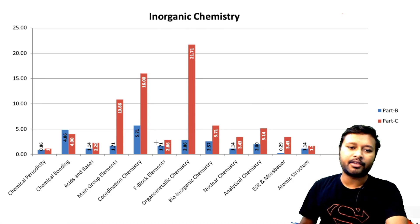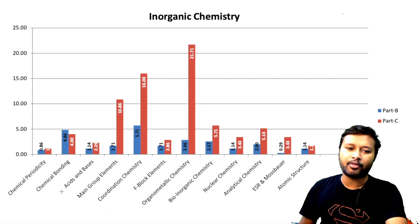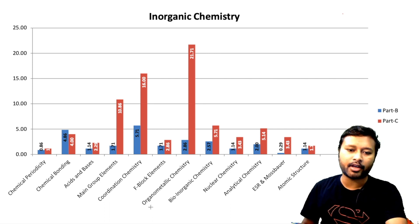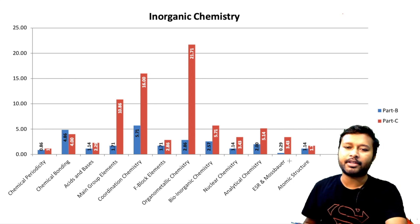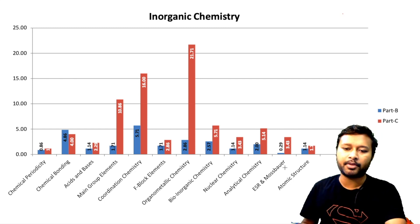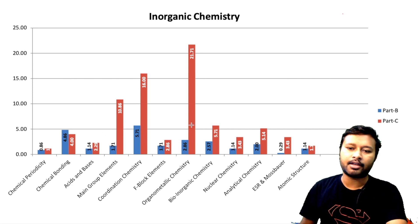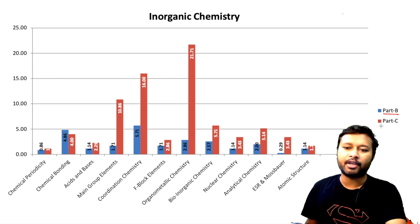Here is the detailed analysis of inorganic chemistry. There are two color bars — blue bars show Part B marks and red bars show Part C marks. The topics on the x-axis include chemical periodicity, chemical bonding, acid and base, main group elements, coordination chemistry, f-block elements, organometallic chemistry, bioinorganic chemistry, nuclear chemistry, analytical chemistry, ESR and Mössbauer spectroscopy, and atomic structure.